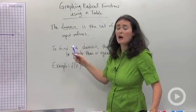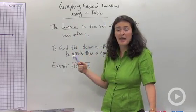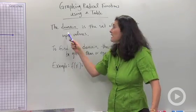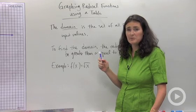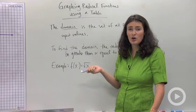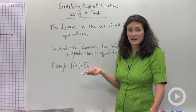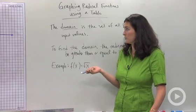Okay, so the first thing I want to remind you guys is of domain and range. The domain is the set of all possible input values. That's really important when it comes to square roots because you guys know the square root of a negative number is not a real value. It's not a real solution.